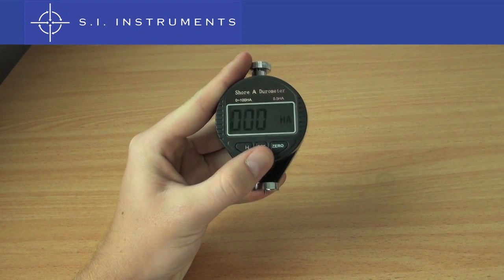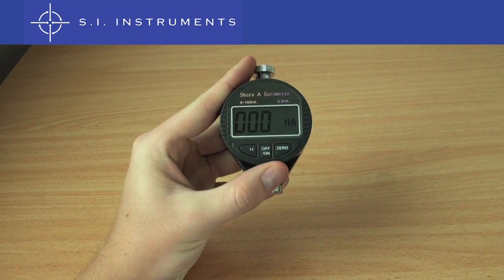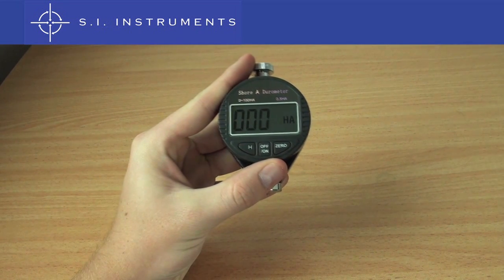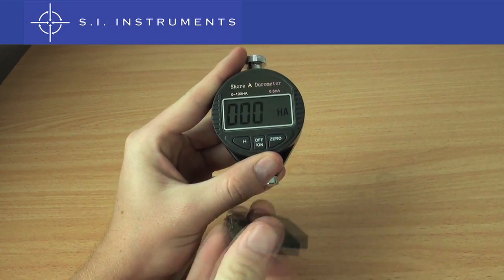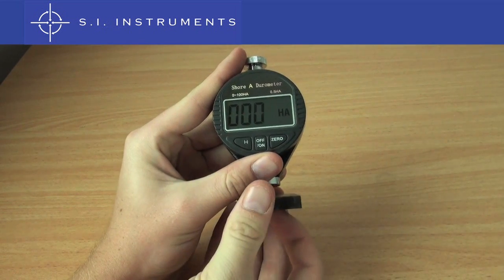When powering the unit up, the unit is immediately ready for measurement. Simply press the protruding needle onto the rubber surface and the reading shows up on the display.